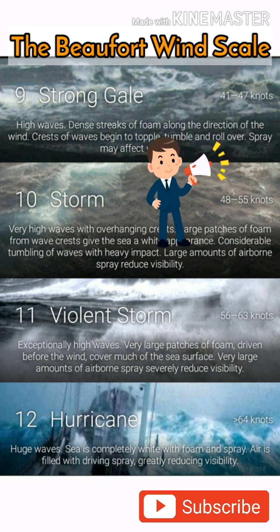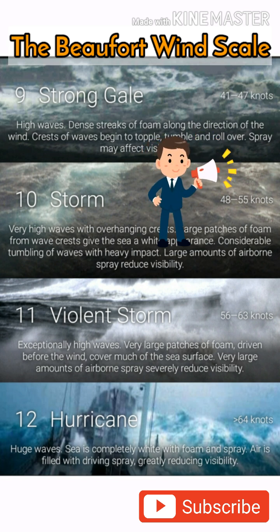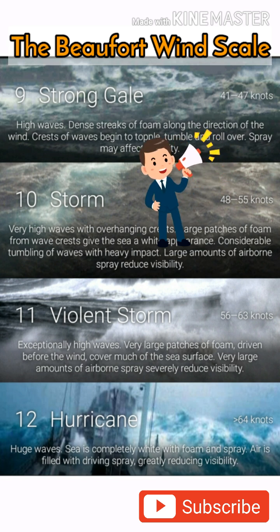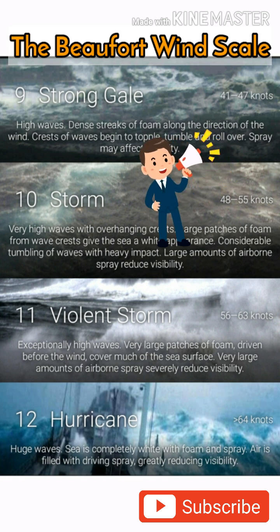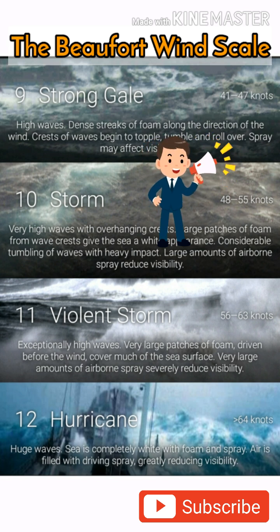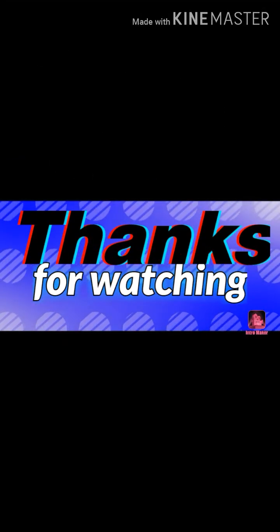Force 11 — Violent Storm. Wind speed 56 to 63 knots. Medium-sized ships lost to view behind waves, sea covered in white foam, visibility seriously affected. Force 12 — Hurricane. Wind speed 64 knots and above. Air filled with foam and spray, very poor visibility.